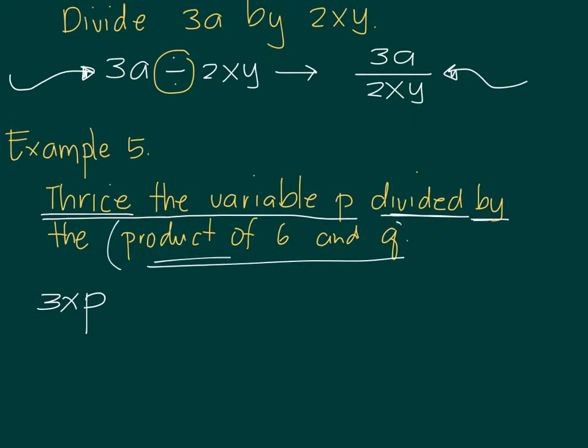So this is the product of 6NQ. So 3, or thrice the P, 3 times P, will be divided by the product of 6NQ. And again, multiplication can be written as 3P next to each other. Divided by means division is over 6 times Q. You can write 6 times Q as 6Q. So this should be the translated statement, or the mathematical expression for the statement thrice the variable P divided by the product of 6NQ.